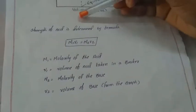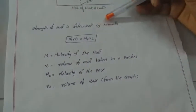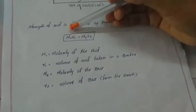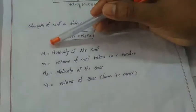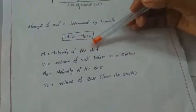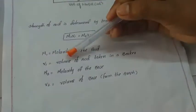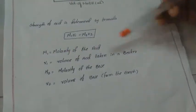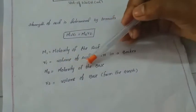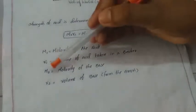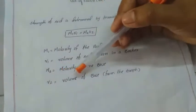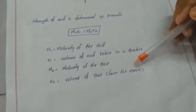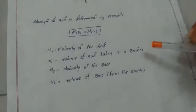Strength of acid is determined by the formula M₁V₁ = M₂V₂, where M₁ is the molarity of the acid, V₁ is the volume of acid taken in the beaker, M₂ is the molarity of the base, and V₂ is the volume of the base obtained from the graph at the neutralization point.